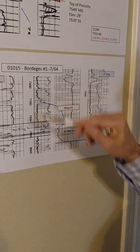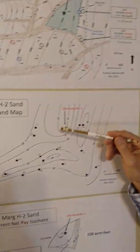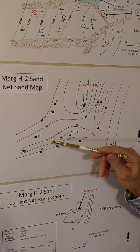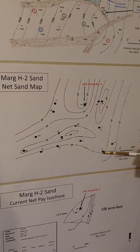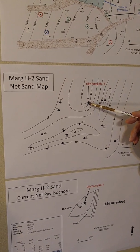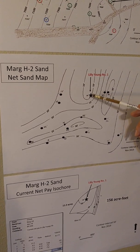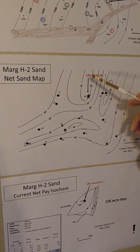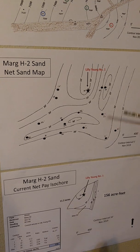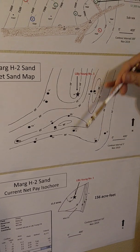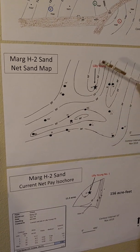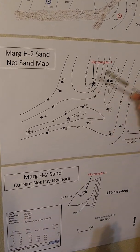Once we get all the thicknesses for all the wells, we post it on the net sand map. Each of these black dots is a well with its value of thickness. The subject well that we're doing the reserve for is the Lilly Young — it's the thinnest well in the whole field. The contour is our geologic interpretation of how the sand was laid down and how thick, which gives us an idea of the variability of the thickness over the area.